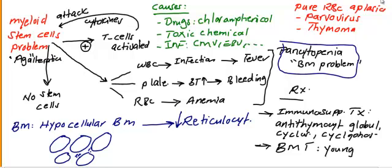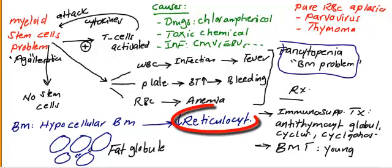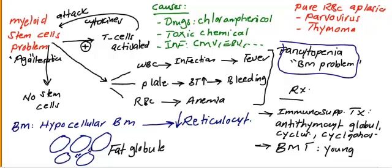In summary, the main problem in aplastic anemia is myeloid stem cells. As a result, the three components of blood — white blood cells, platelets, and red blood cells — are all affected, manifesting clinically as pancytopenia. On bone marrow biopsy, you will see fat globules replacing the bone marrow with scattered lymphocytes. This leads to decreased reticulocytes, or reticulocytopenia. Causes include drugs like chloramphenicol, toxic chemicals, and infections like CMV and EBV. Pure red blood cell aplasia is seen with parvovirus and thymoma. Treatment is immunosuppressive therapy or bone marrow transplant, with good response in young patients.